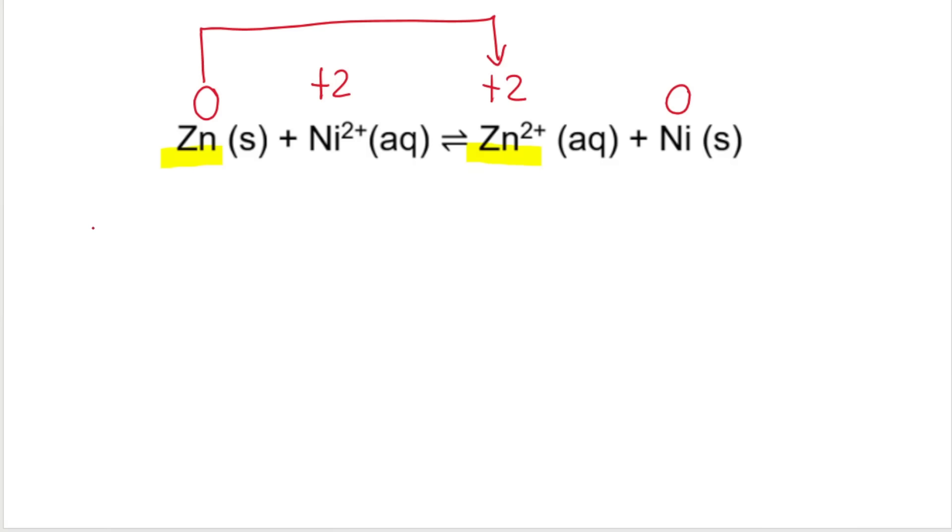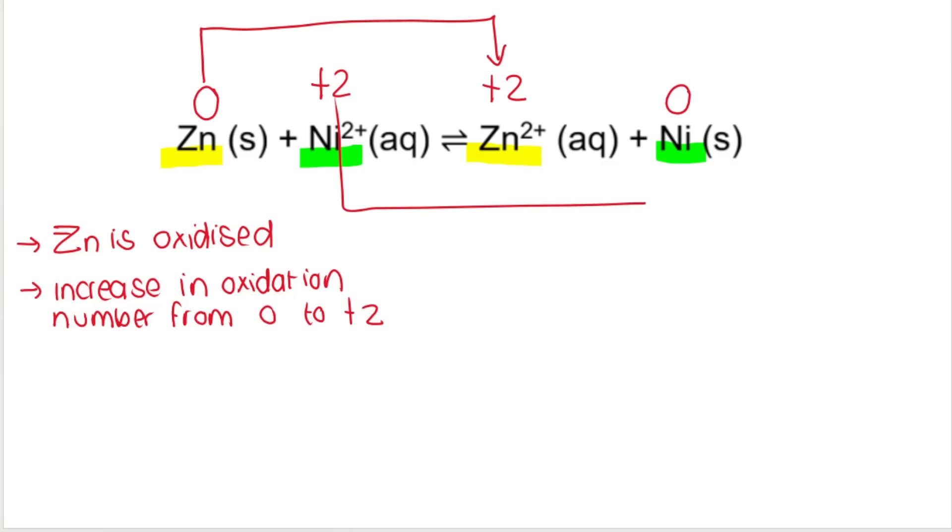So for zinc, the oxidation number increased. That means that zinc is oxidized. There's been an increase in oxidation number from zero to plus two. And then in the same way, if we compare nickel, nickel over here, nickel over here, you can see that to go from two to zero, there must be a decrease in oxidation number. And that means that Ni²⁺, the nickel ion, Ni²⁺ has been reduced because it's a decrease in oxidation number.